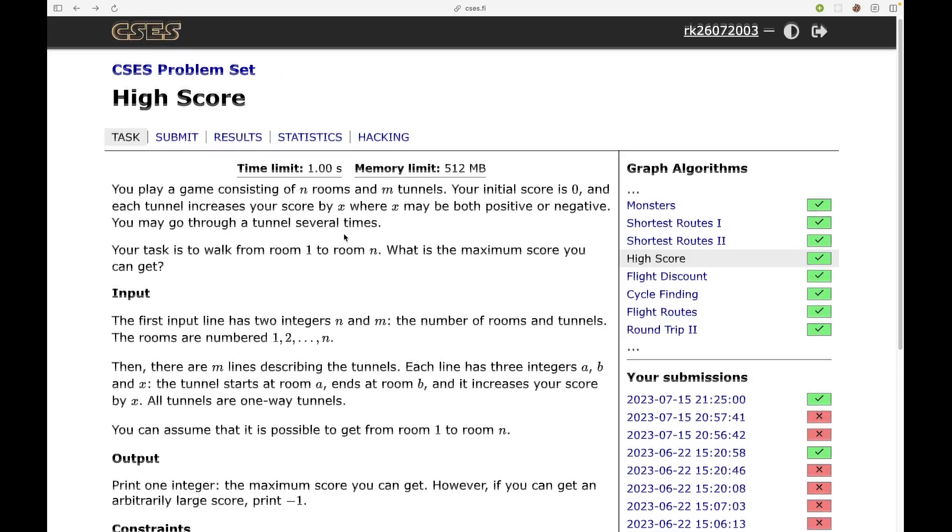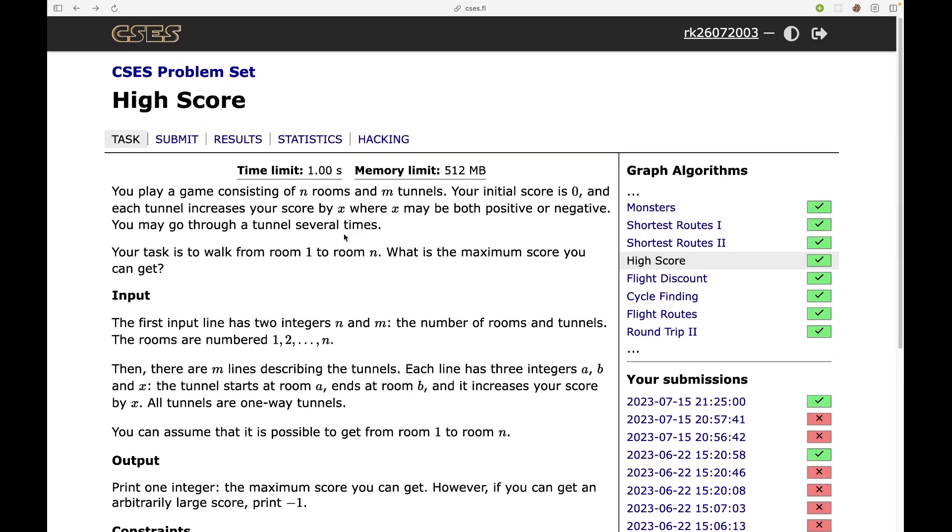So let's see a problem. This is the problem from CSES problem set. The problem is High Score. You play a game consisting of n rooms and m tunnels. Your initial score is zero. Each tunnel increases your score by x where x may be both positive or negative. You may go through the tunnel several times.